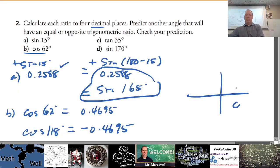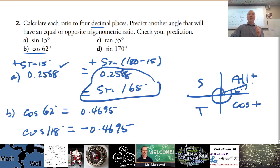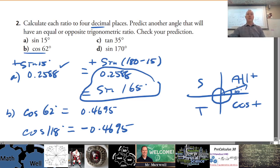The CAST rule: cosine is positive for angles terminating in the fourth quadrant, all ratios are positive in the first quadrant. For example, an angle of 370 degrees terminates in the same position as 10 degrees, so sine of 370 equals sine of 10 — a positive value. In the second quadrant, cosine is negative and tangent is negative.